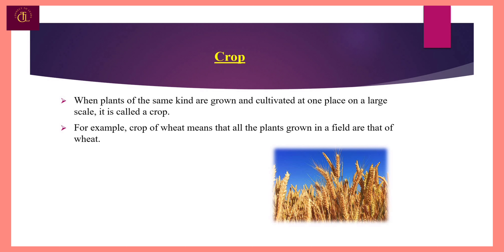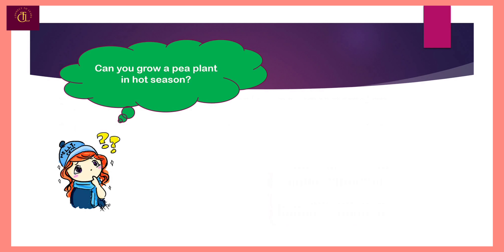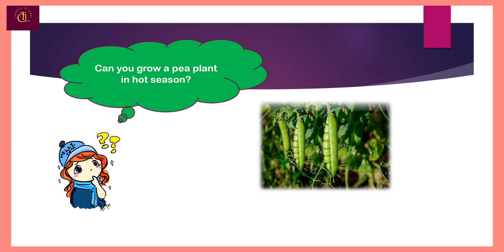For example, a crop of wheat means that all plants grown in a field are that of wheat. Now, if you wish to grow a pea plant in a hot season, can you do it? No, you can't. Do you know the reason behind it?